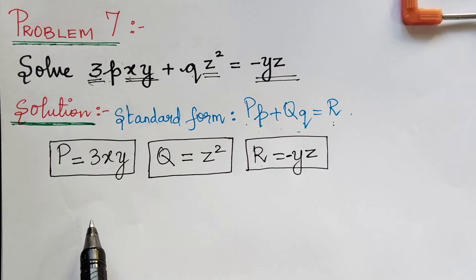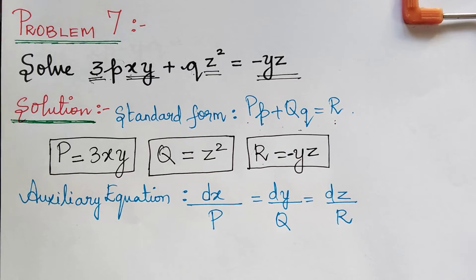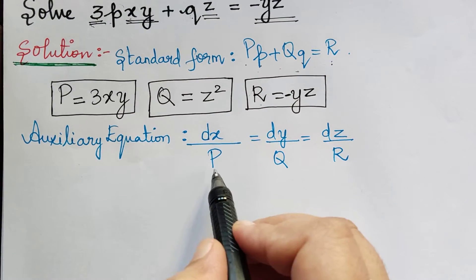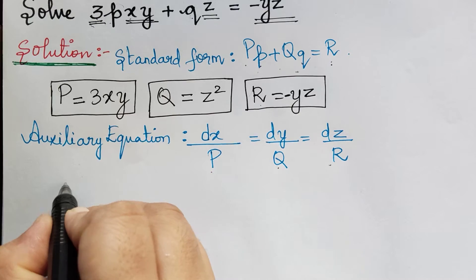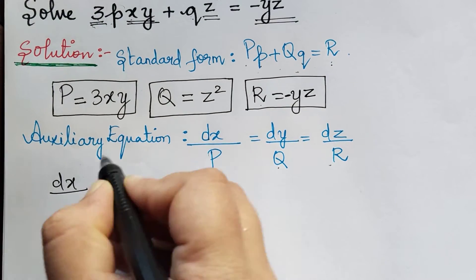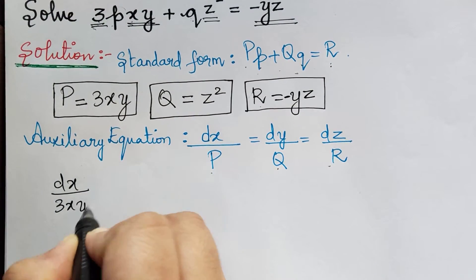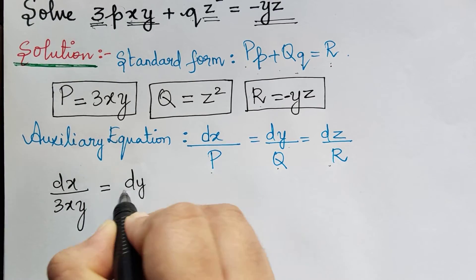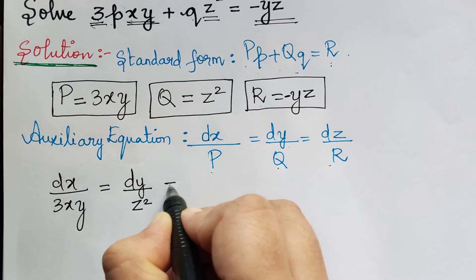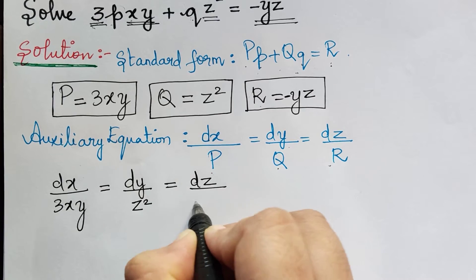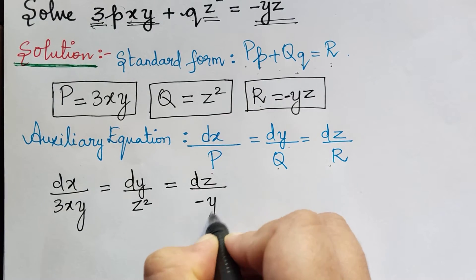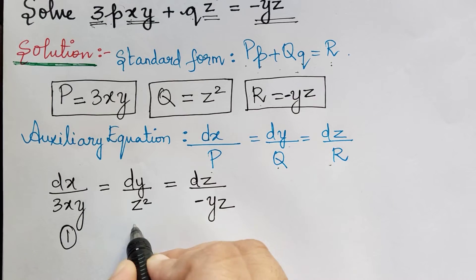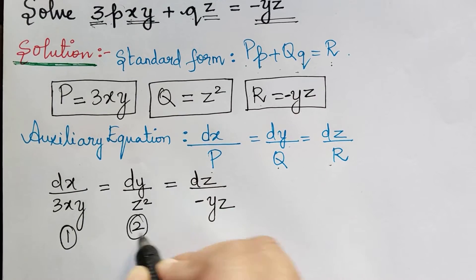Next, we have to write the auxiliary equation. The auxiliary equation is given by substituting P, Q, and R, so we get dx by 3xy is equal to dy by z squared is equal to dz by negative yz. This is the auxiliary equation — let us mark these as 1, 2, and 3.